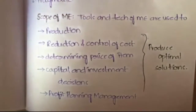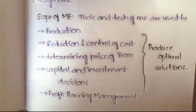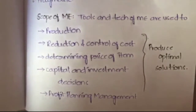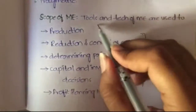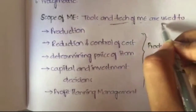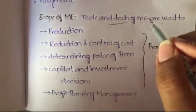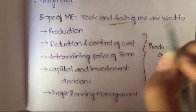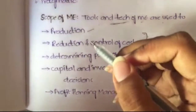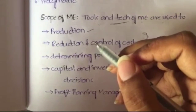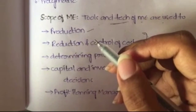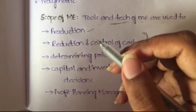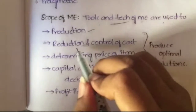Coming to the scope of managerial economics — scope means where we can use this concept, in which aspects of business. The tools and techniques of managerial economics are used in production: calculating how much production you can make from your raw materials in a factory or industry.